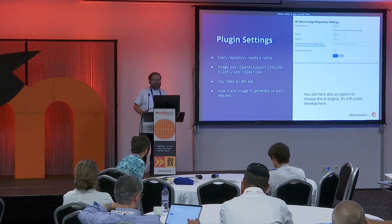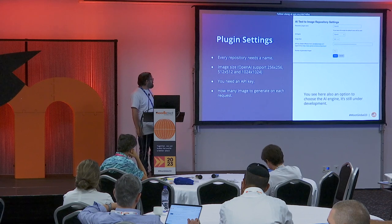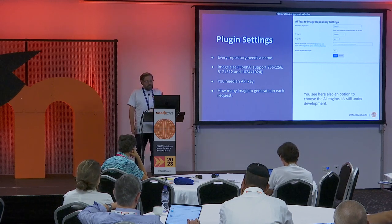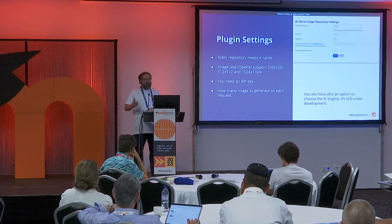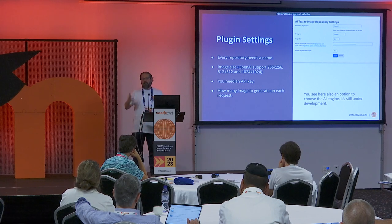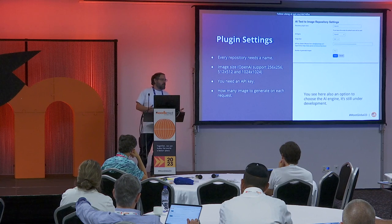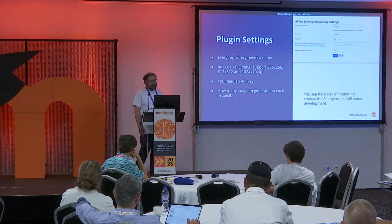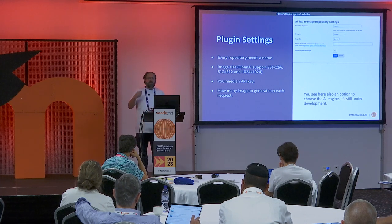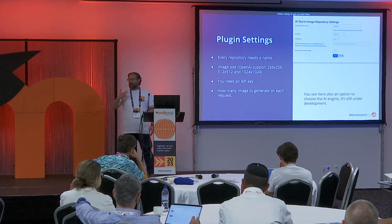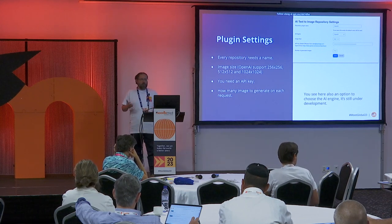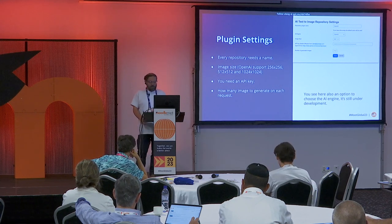In the plugin settings, you can see all your options. A repository needs a name for the file picker. You can choose an AI engine — it's not yet open but in development to support more than just OpenAI. You can define image size: bigger is higher quality but costs more and takes longer to generate. You provide the OpenAI API key and can also choose how many images to generate per prompt — the default is four, matching OpenAI's default, but you can adjust it to pay more or less.